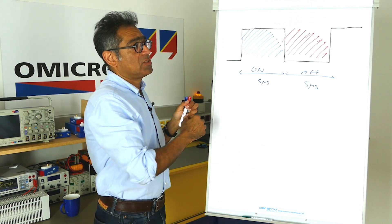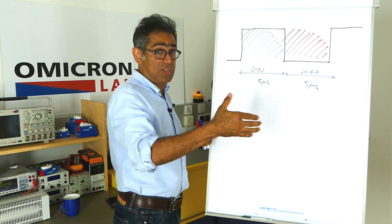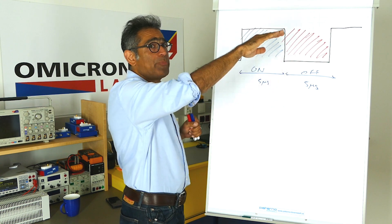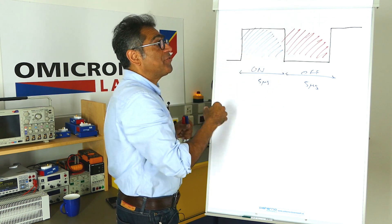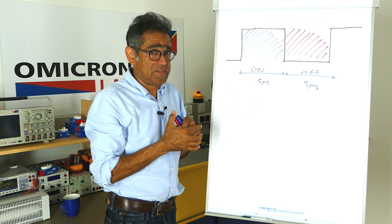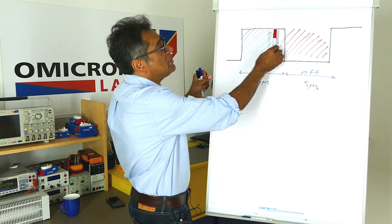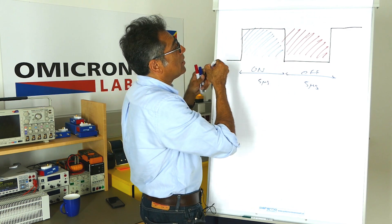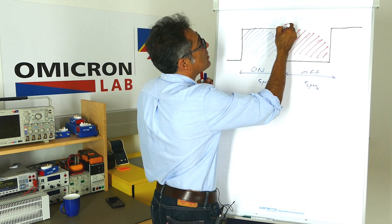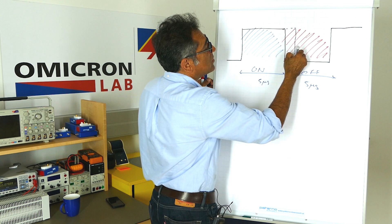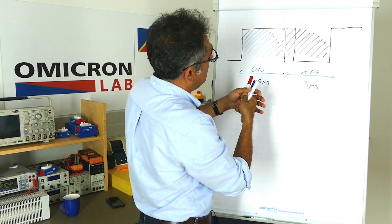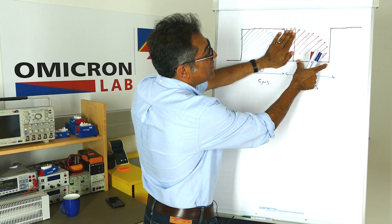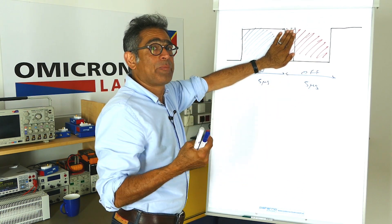Now let's assume that the load on the output changes, so you increase the load and that will cause a dip in the voltage. The feedback loop will have to compensate for this. Now if the duty is increased, which would be the tendency of the feedback loop, let's say from five microseconds to six microseconds, in fact what is happening is that you have got less time to deliver the power.